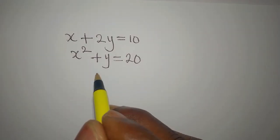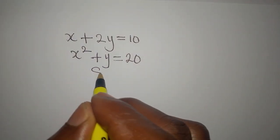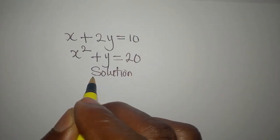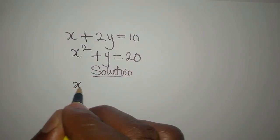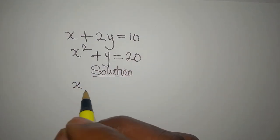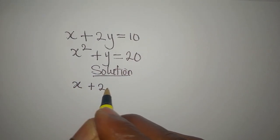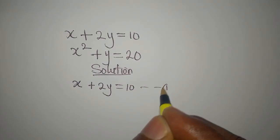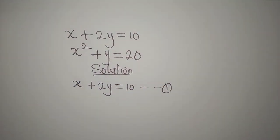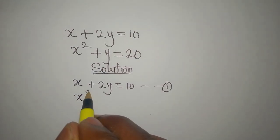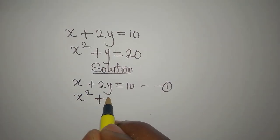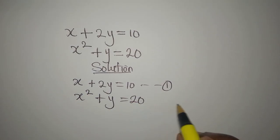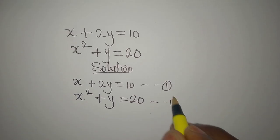Hi everyone. Let's provide the solution to this problem. x plus 2y equals 10 as equation 1, then x squared plus y equals 20 as equation 2.